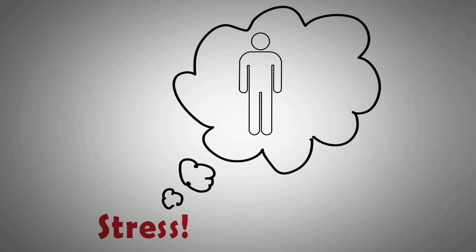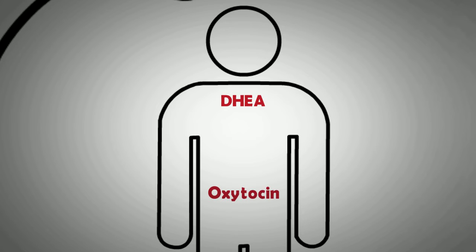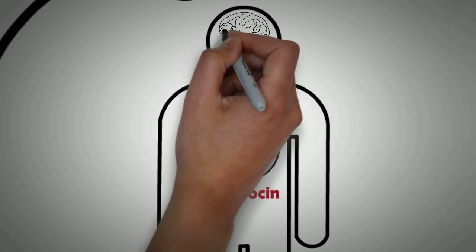So the next time you feel stress coming on, visualize the helpful hormones DHEA and oxytocin coursing through your body. Think to yourself, this is my body giving me the ability to learn and perform at a higher level. The DHEA is actually helping me learn faster and grow new connections in my brain.